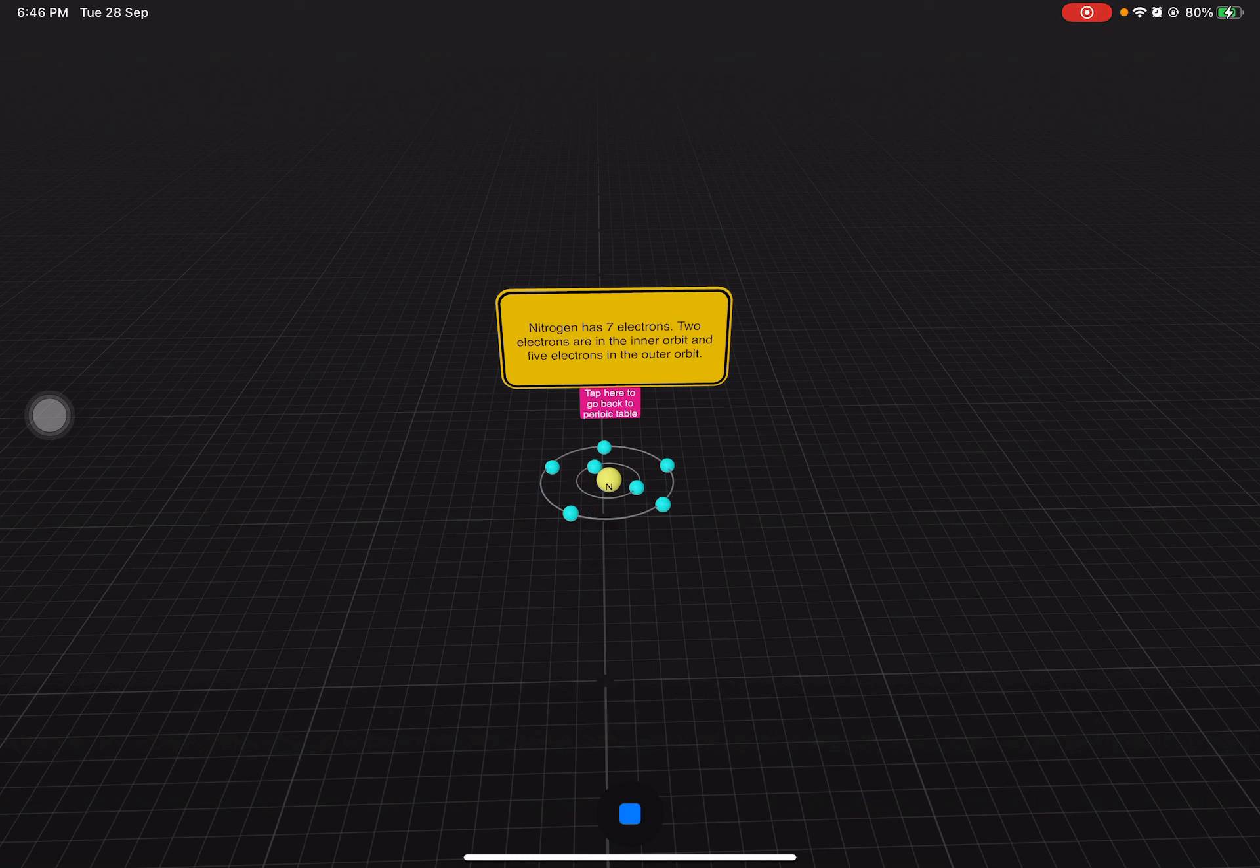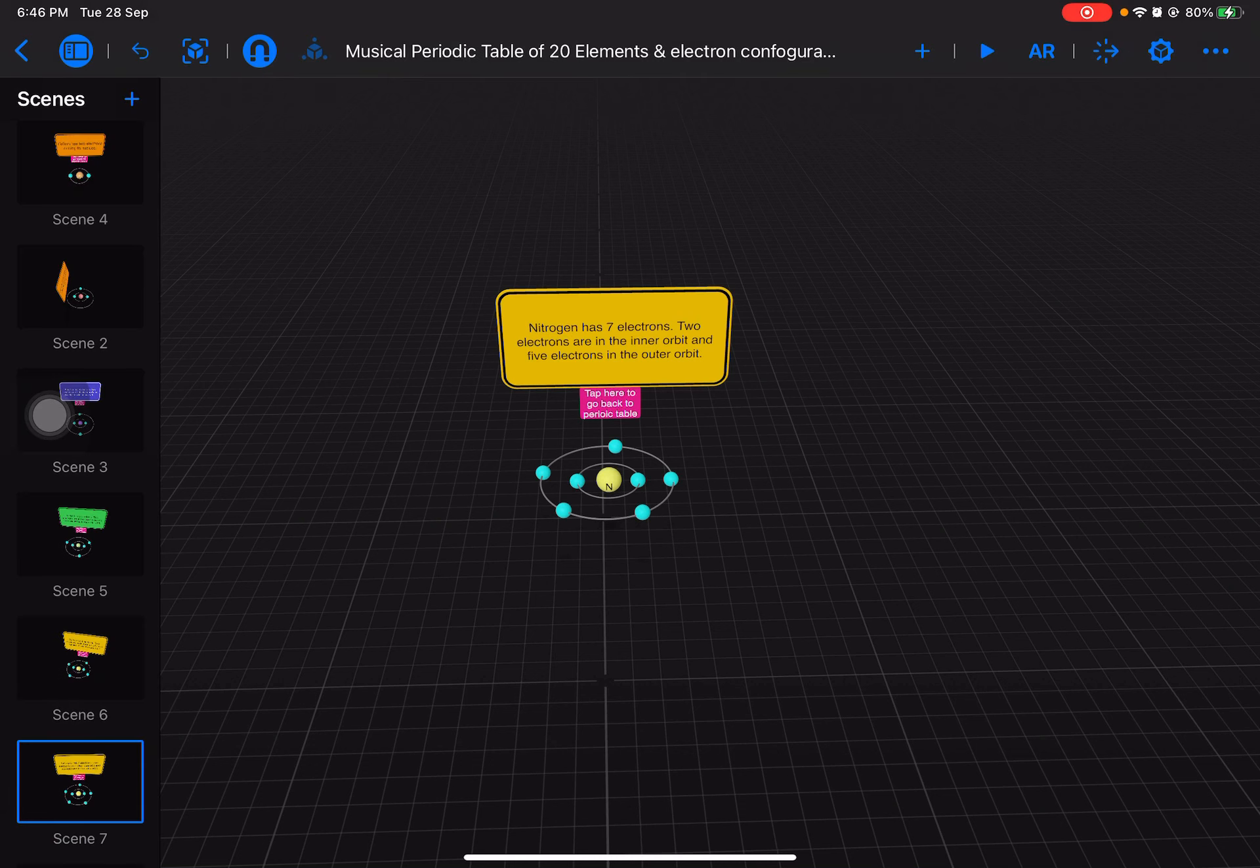In this case, students can actually see the electron circling or orbiting the nucleus instead of just a static picture in the book.